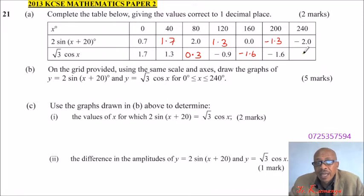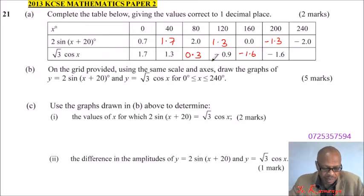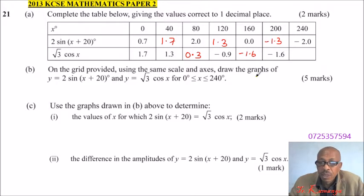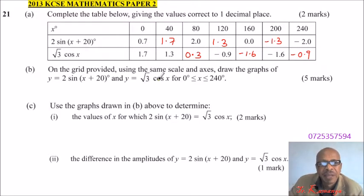Finally, compute √3 cos 240, which gives minus 0.9 to one decimal place. With the help of a calculator, you should be able to fill this table easily.